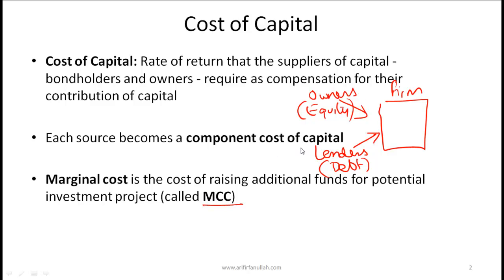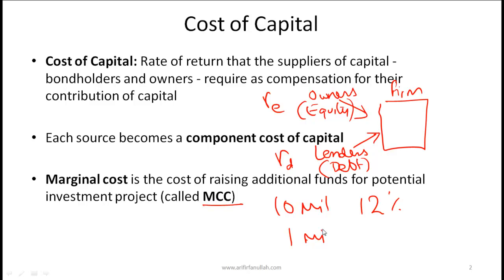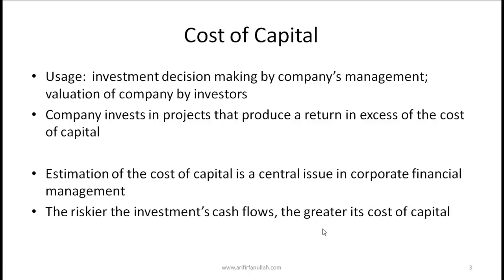In this simplistic case we have two components: the cost of equity, denoted RE, and the cost of debt, denoted RD. Marginal cost refers to the cost of raising additional funds. For example, if a firm has already raised $10 million at a cost of capital of 12%, and raising an additional $1 million costs 14%, then the marginal cost of capital is 14%.